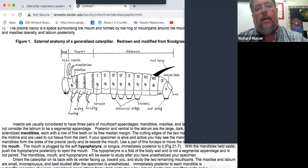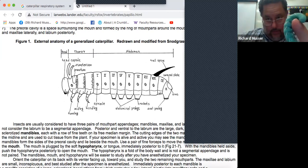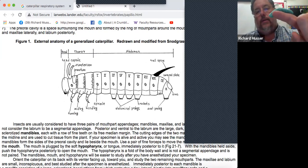Going back to the thorax, there's three segments that make up the thorax. The very front one is called the prothorax, the middle one is called the mesothorax, and the last one is called the metathorax. You can see the legs are attached to them. The wings would come off the meso and meta if it's a winged animal.